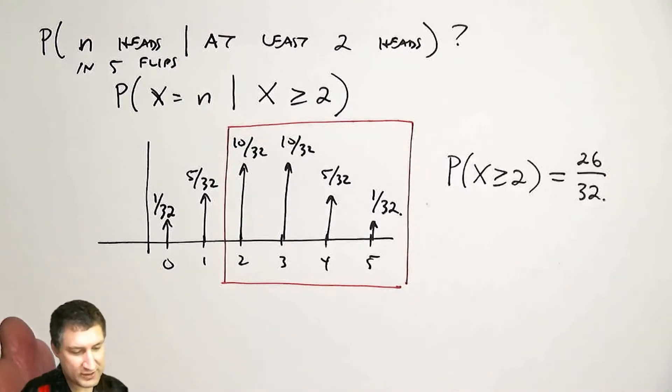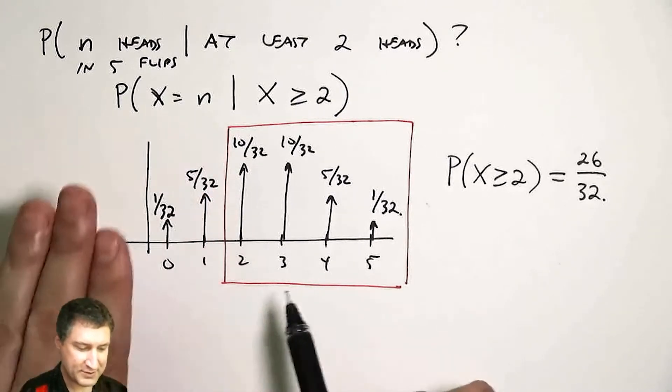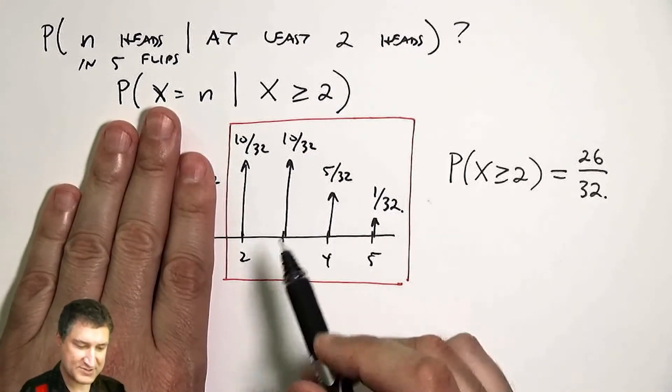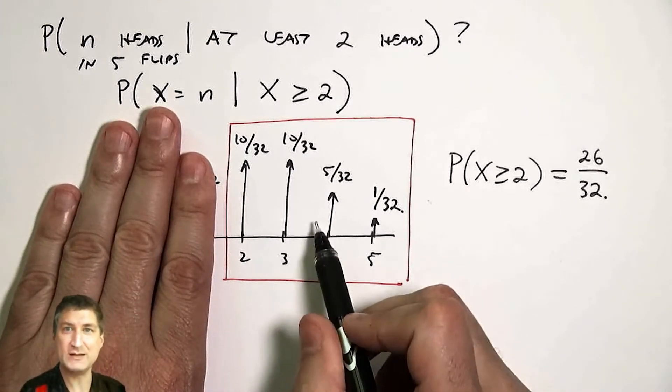And now, the conditional PMF is like rebalancing these probabilities to say, okay, I know this happened, tell me how does the PMF shift? Well, these things can no longer happen. They have probability zero. And it's kind of like rebalancing the remaining probability mass inside of that box.